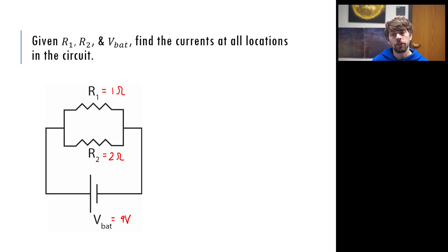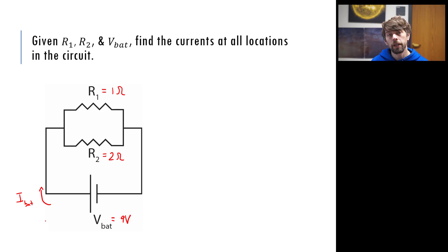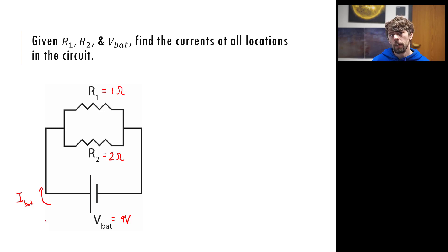Now imagine for a second if I asked you to find the current being provided by the battery — I'll label that I_battery. The appropriate approach to this problem would probably be to combine resistors. Now you say, wait a minute, are these resistors in series or in parallel?